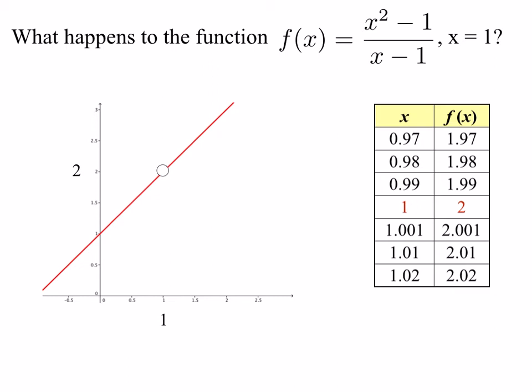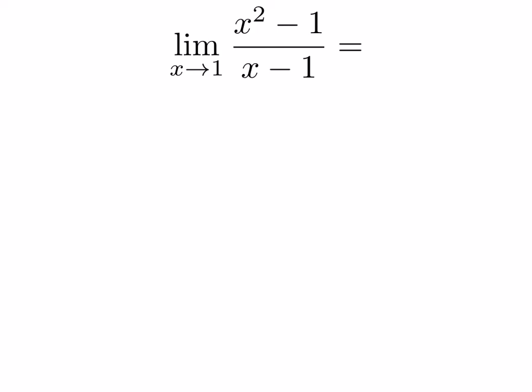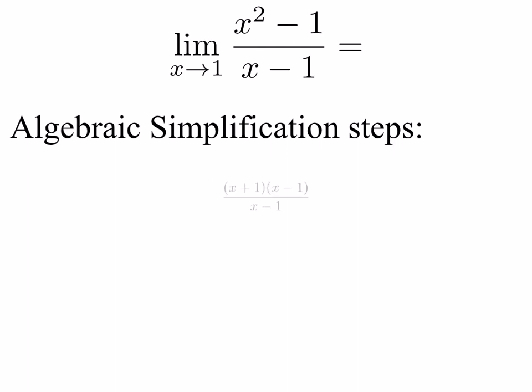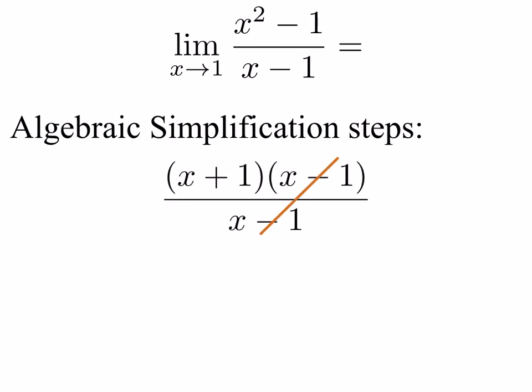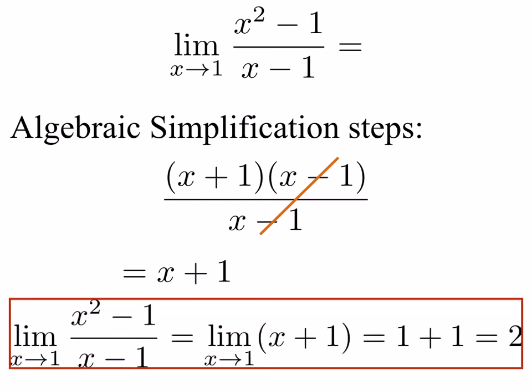Let's consider doing this algebraically. The first thing I notice is the x minus 1 in the denominator — when x is 1, we'll have a 0 in the denominator, which indicates we might want to try some algebraic simplification. So we'll factor the numerator: we get x plus 1 times x minus 1, and clearly the x minus 1's cancel. So this function really looks like x plus 1, with the exception of that hole at x equals 1. If we take the limit of x plus 1, we can write that the limit as x approaches 1 of x squared minus 1 over x minus 1 equals the limit as x approaches 1 of x plus 1. Plugging in the limit point, that equals 1 plus 1, or 2.